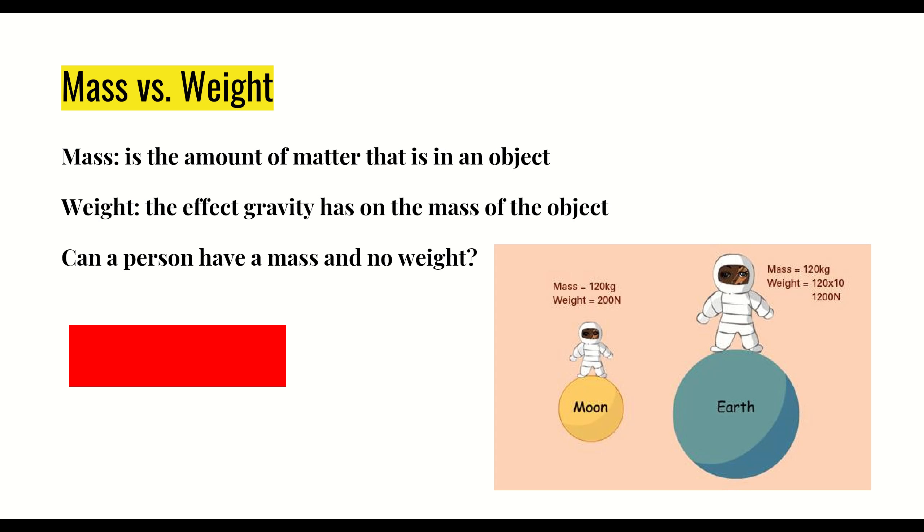Let's look at mass versus weight. If you look at this idea, mass is the amount of matter in an object, whereas weight is the effect of gravity on the mass of the object. So again, there's that extra piece of the gravity. Could a person have a mass and no weight? Is something like that possible? Now before we answer that, let's talk about a scenario. Let's say that we have an astronaut here and they go on the moon and they go on the earth.